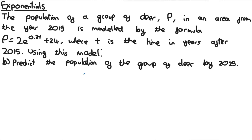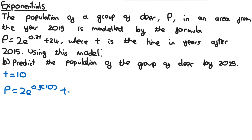For part B, we predict the population by 2025. Since the model starts in 2015 and T is years after 2015, in 2025 T equals 10. So P equals 2e to the power of (0.3 × 10) plus 24. Putting that into a calculator gives 64.171, but since you can't have a fraction of a deer, we round to 64 deer.